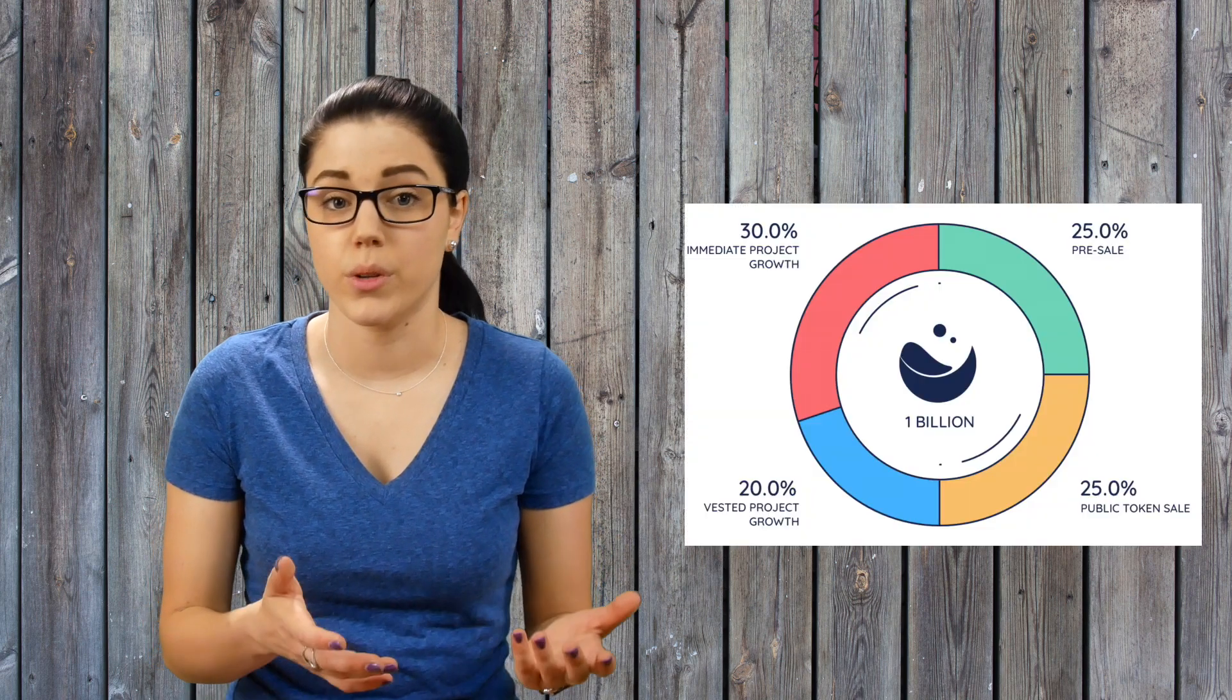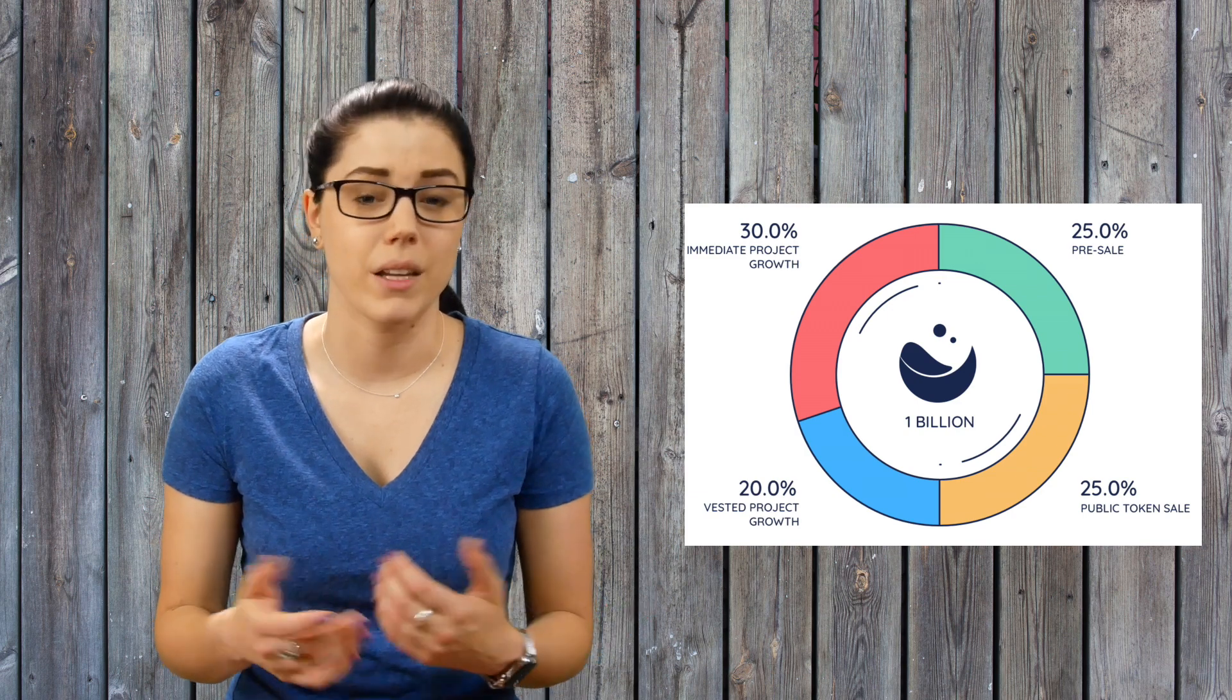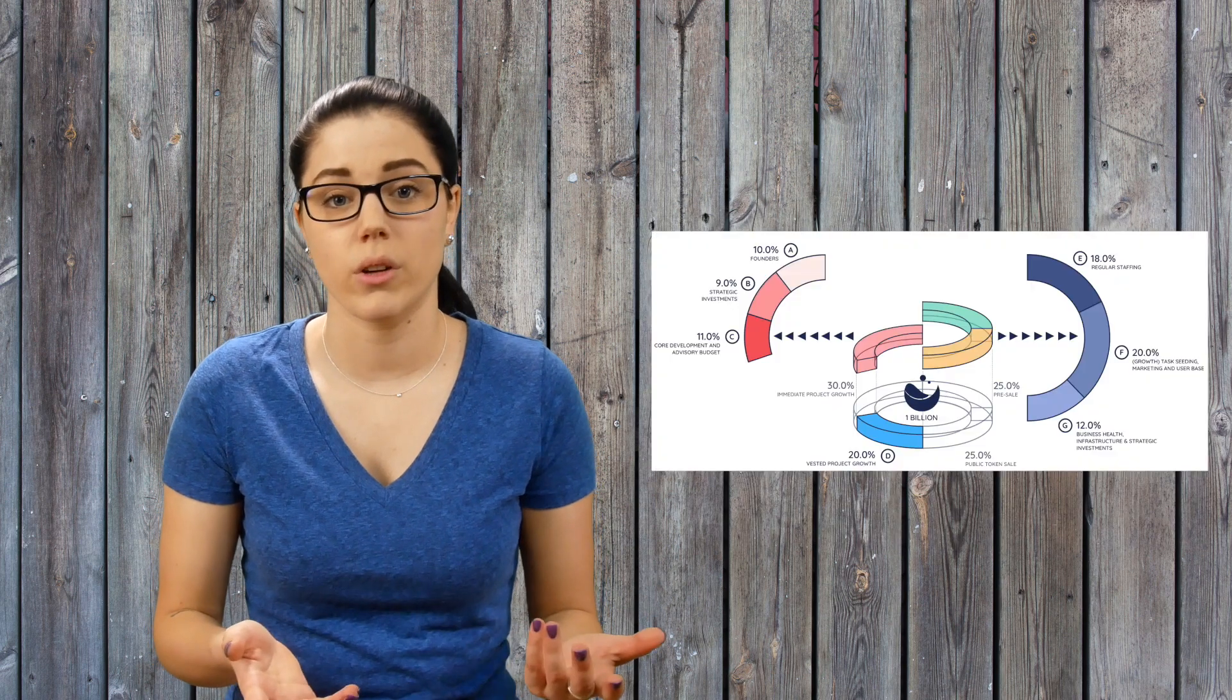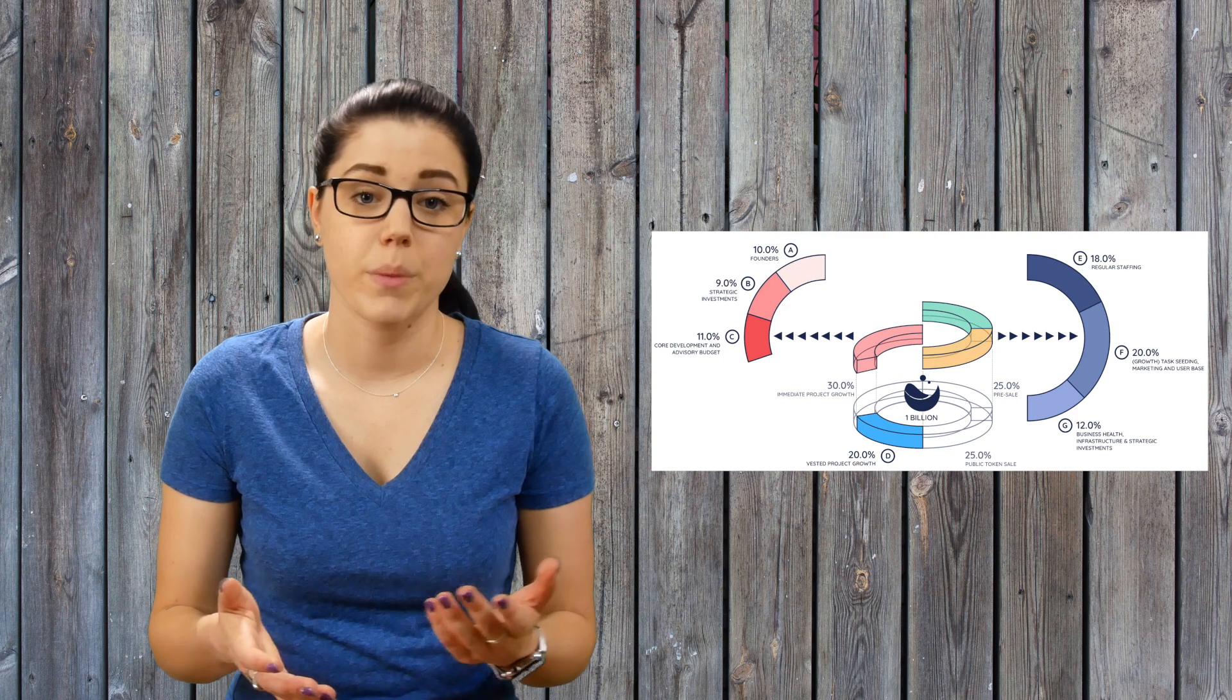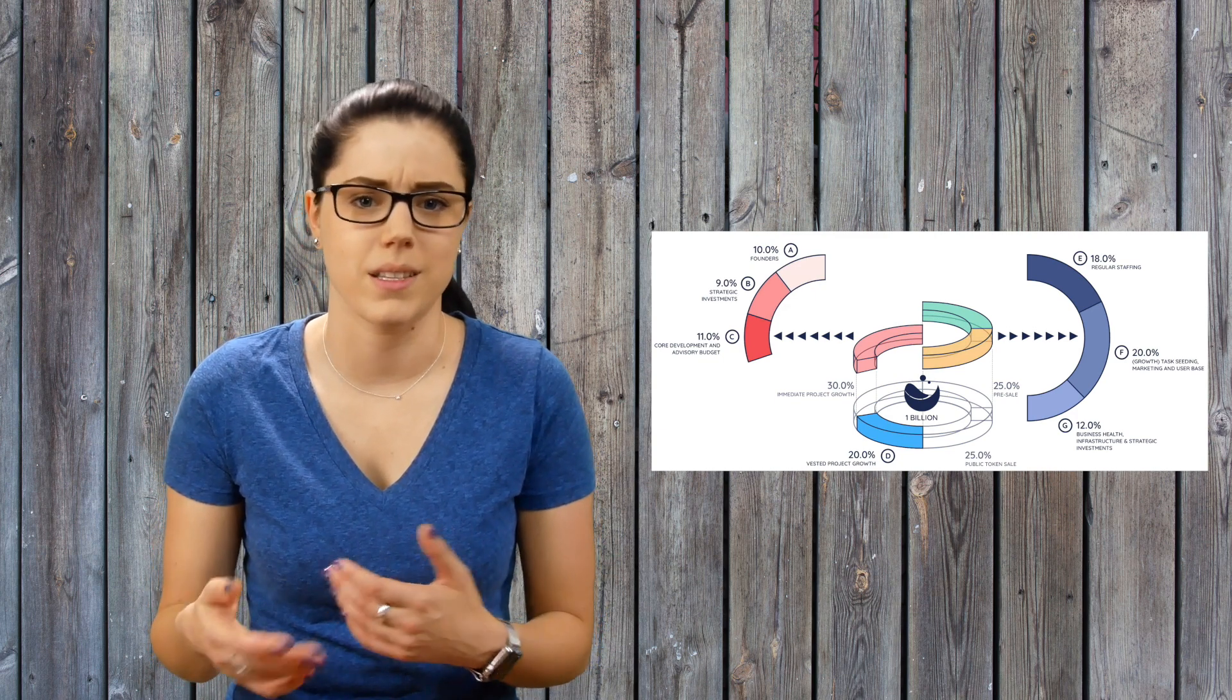The total supply of Moonlight or LUX tokens will be 1 billion. There will be no bonus provided during the pre-sale event. They've stated it's because they want to decrease the incentive of people to buy and flip the project. The LUX token allocation is broken down as follows: 30% for immediate project growth, meaning strategic partnerships, core development incentives, and so on.